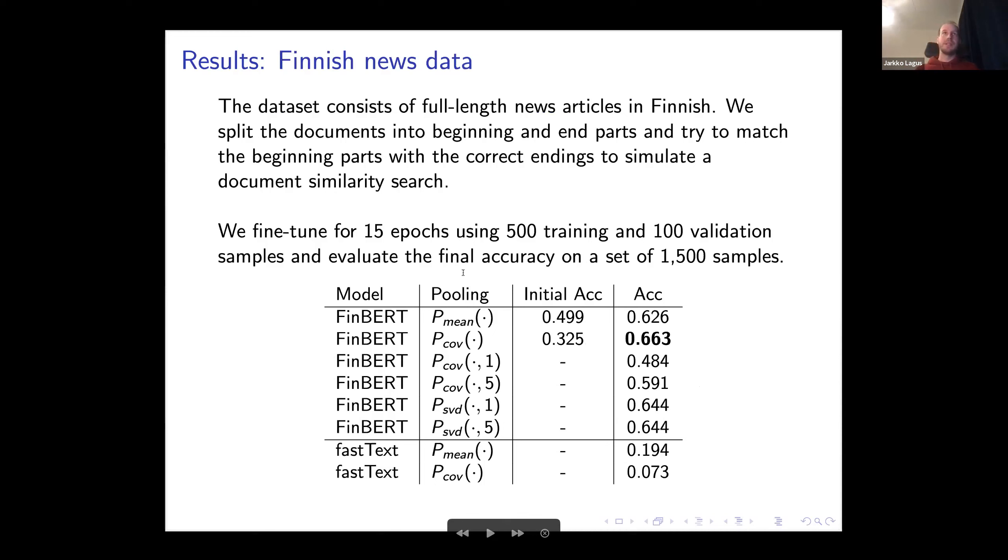For the full document tests, first we used Finnish news articles. We took 1,500 samples which we split into training and test. We split the documents to create the dataset. We took news documents and split them into beginning and end parts. This gives us a matching task where we have to match the beginning part with the correct ending part. We fine-tuned for 15 epochs using 500 training samples and 100 for validation, and evaluated the final accuracy with 1,500 samples.